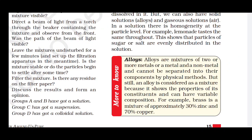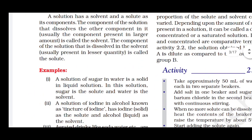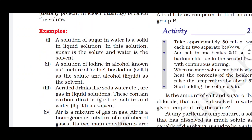An alloy is a mixture of two or more metals or non-metals that cannot be separated by a physical method. For example, brass is a mixture of 30% zinc and 70% copper, which is a common alloy. In the solution of sugar, sugar is the solute and water is the solvent. Iodine solution is not prepared by mixing with water; instead, iodine is mixed with alcohol as the solvent, and this solution is known as tincture of iodine.